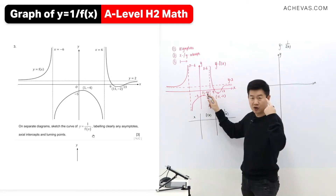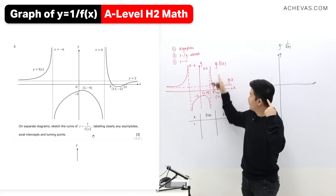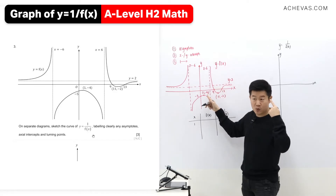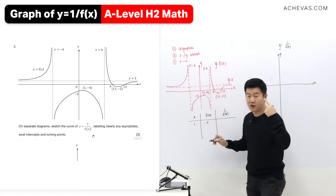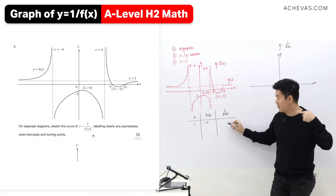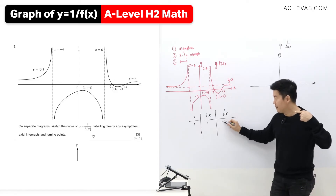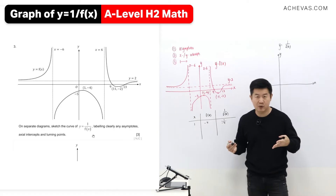This point is 1 minus 4. So at this point, x is 1. What is f(x)? f(x) is the y coordinate, so this is going to be minus 4. Can you predict what is 1 over f(x)? 1 over f(x) will be 1 over minus 4, or negative 1 over 4 — negative 1 quarter.